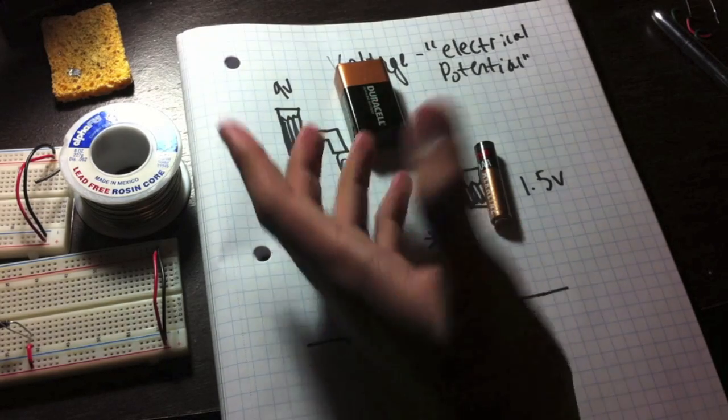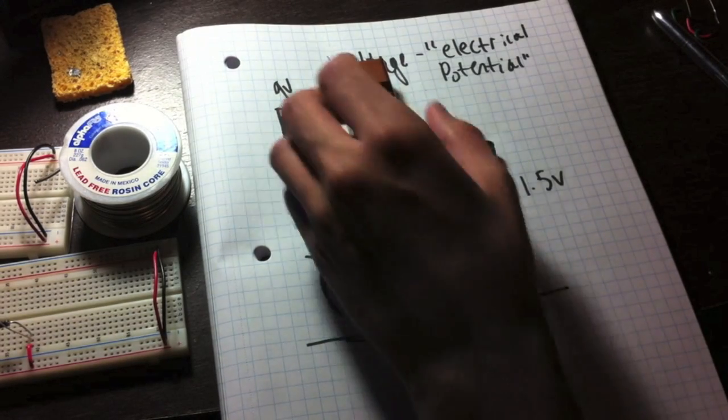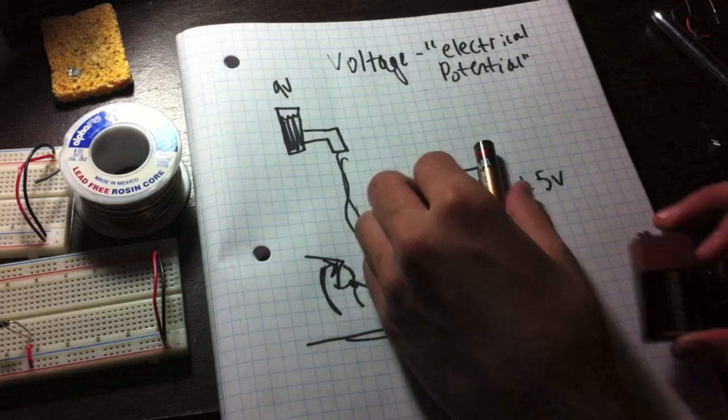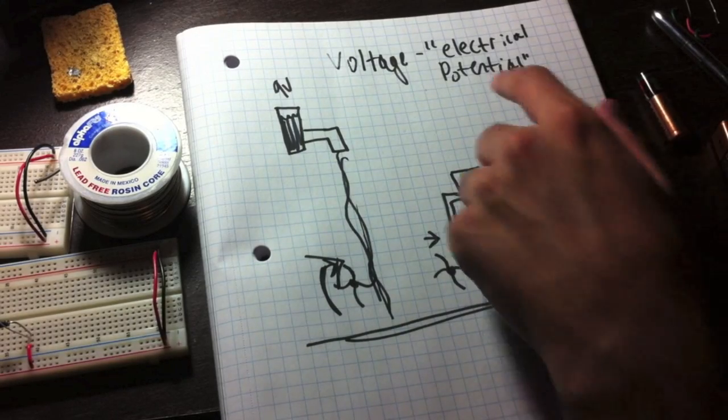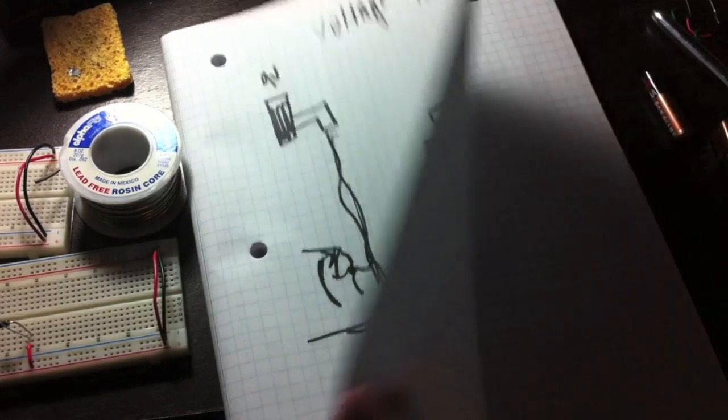Therefore think of it like a higher pressure of the electrons. So that's basically what voltage is. It's the electrical potential. Now let's go to current.